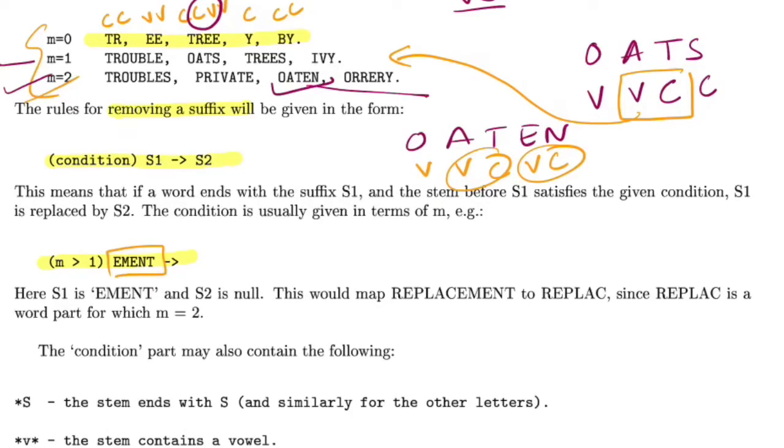For the word replacement, this is the condition and this is termed as S1. If we calculate M for the sequences of C and V, we get C V C C V C, so you have two combinations of VCs that occur. M greater than one satisfies, hence EMENT resolves to null, giving you the output. A similar set of rules is essentially what makes a Porter Stemmer.